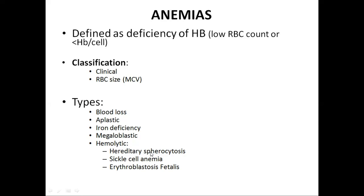For example, in inherited spherocytosis, RBCs become spherical shaped and are very fragile, so excessive hemolysis will occur. In sickle cell anemia, hemoglobin becomes sickle shaped, which causes damage to the RBCs. And in erythroblastosis fetalis, which is a disease of newborns, there is excessive hemolysis of RBCs.